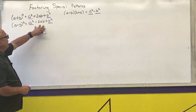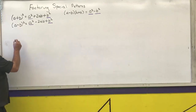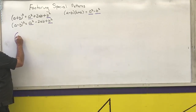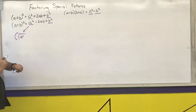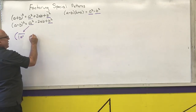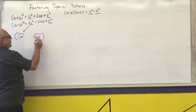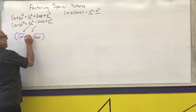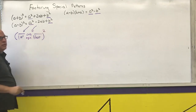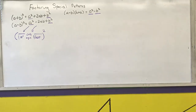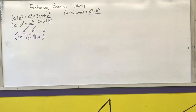Going from the expanded form back to the factored form, my rule is: you're going to take the square root of the first, take the square root of the last, copy the sign, all squared. That's the general pattern.